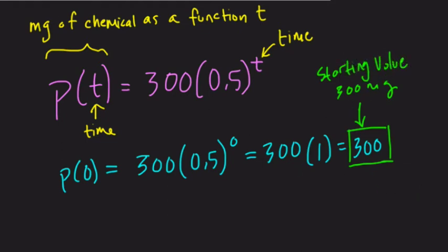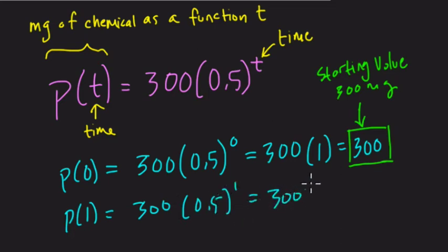That's what it starts at. Now what happens over time after that? Well, what happens after one year? We have 300 times 0.5 to the first power, which is 300 times 1 half, right? Because anything to the first power, the first power is itself. So what's half of 300? That's 150.